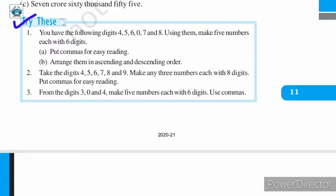Let us now try these exercises. Question number one: you have the following digits — four, five, six, zero, seven, and eight. Using them, make five numbers each with six digits.